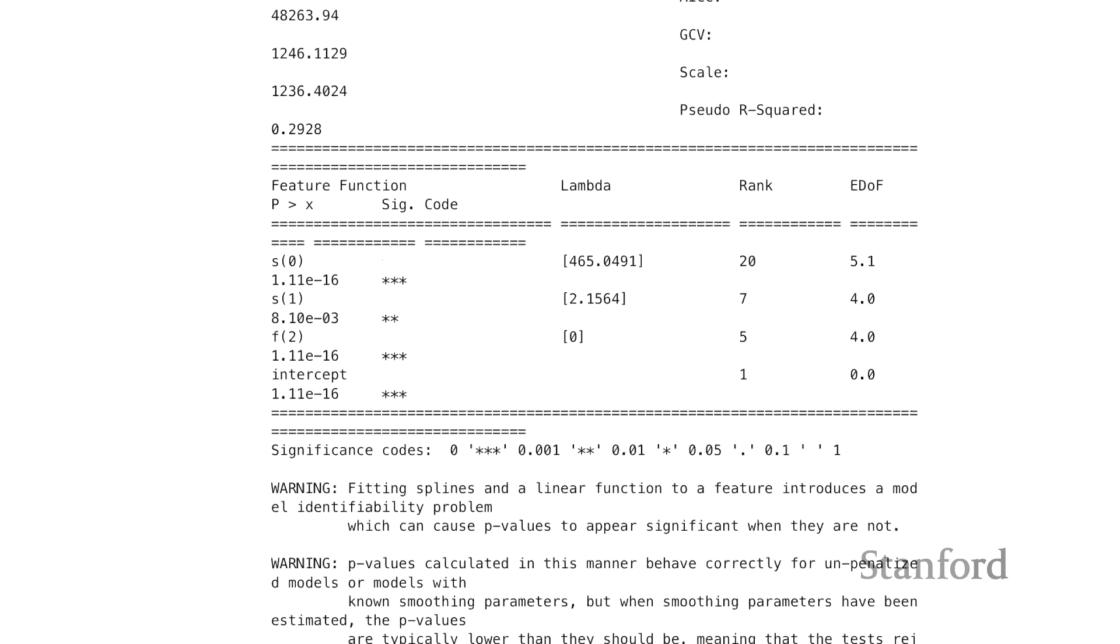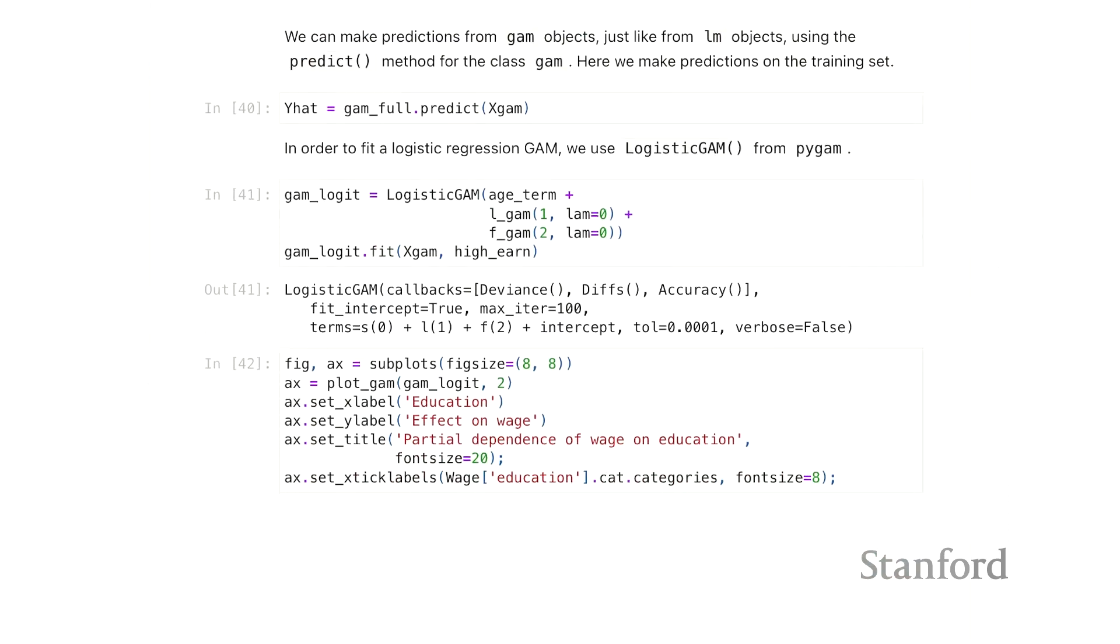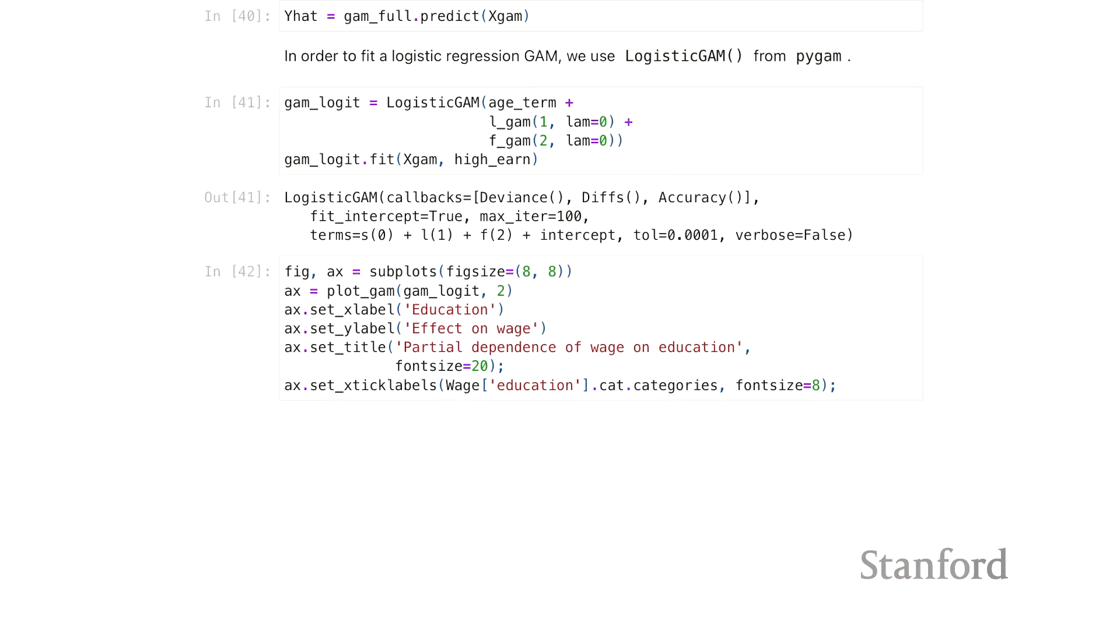So I'm just going to wrap up here with an example of how to use binary regression for GAM. What changes really just is the base estimator. Instead of being linear GAM, it's logistic GAM. Things are specified in the same way. In this GAM, instead of using a spline for year, I'm going to use a linear effect for year. That L stands for, instead of a smoothing spline for an effect, a linear effect.